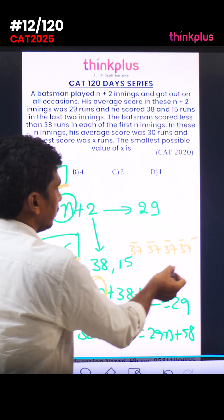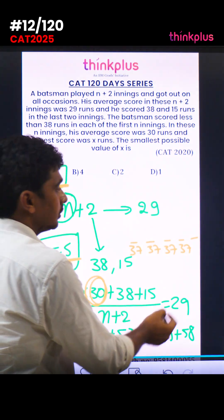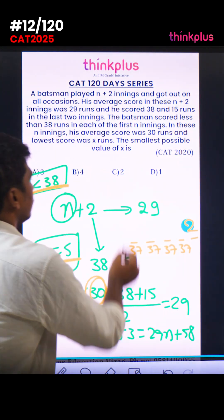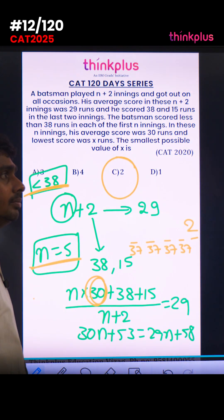Total is 150. Four innings at 37 gives 148. So 150 minus 148 equals 2. The lowest score is 2. The answer is 2.